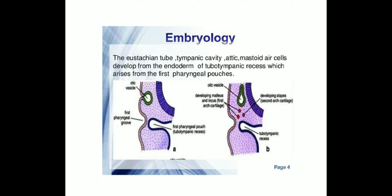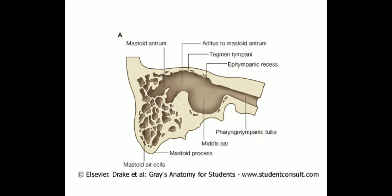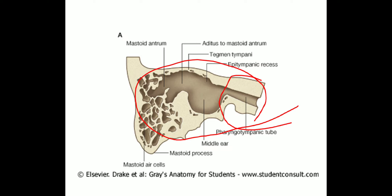The Eustachian tube, tympanic cavity, attic, and mastoid air cells develop from the endoderm of the tubo-tympanic recess, which arises from the first pharyngeal pouch. The whole of the middle ear cleft — Eustachian tube, middle ear, aditus, and mastoid — arises from this recess. The proximal part forms the Eustachian tube, while the distal part forms the middle ear and mastoid air cells.